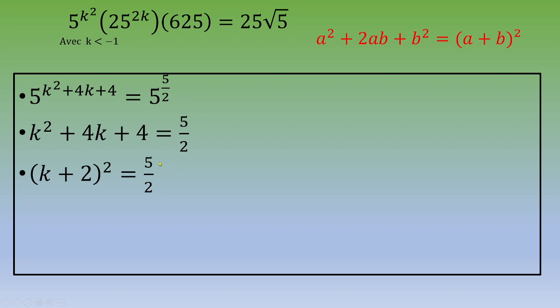This equals 5/2. Now you can write, if you take the square root on both sides, you end up with k+2 equals plus or minus √(5/2).